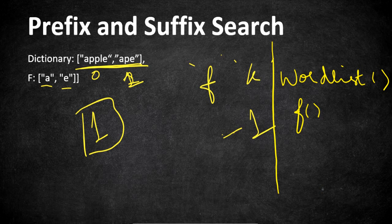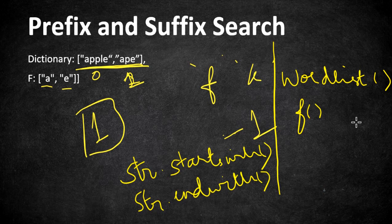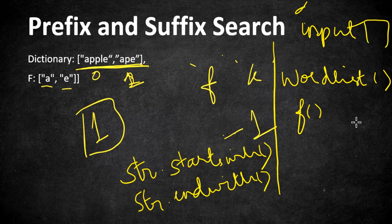For the easier implementation, Java has string functions startsWith() and endsWith(). String.startsWith() helps us determine whether the word starts with the given characters, and endsWith() determines whether the string ends with those characters. We'll use these methods to find the prefix and suffix of a word. We store all dictionary words in an input string array, iterate all the words, and check each word whether it is starting with and ending with the given prefix and suffix. If it is, we return its index; otherwise we return minus one.